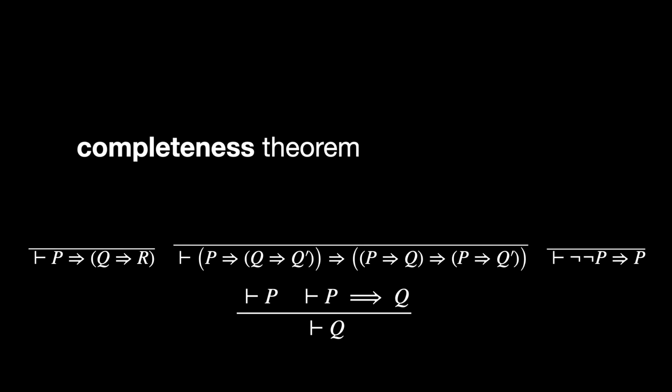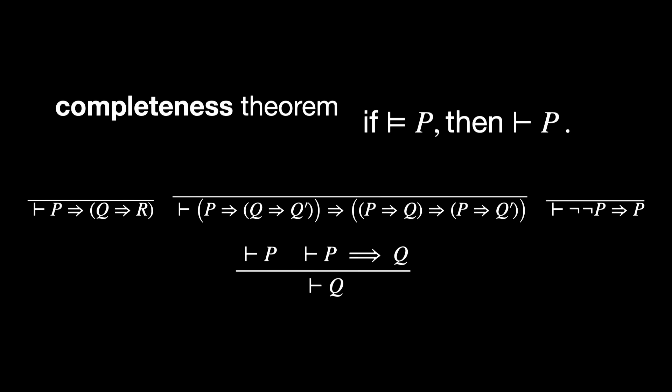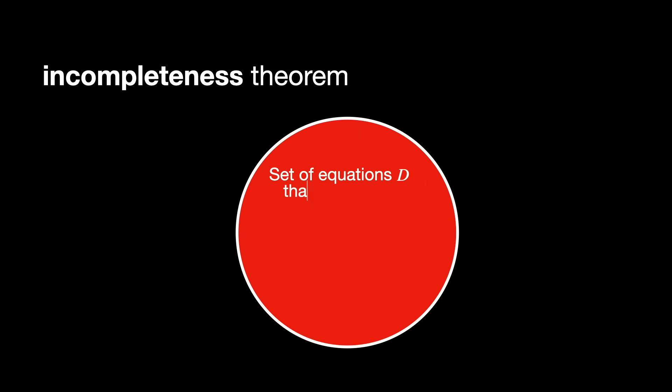Model theory addresses fundamental results such as the completeness and incompleteness theorems. The completeness theorem tells us that if a statement is true in all models of a theory, then it can be proven within that theory. The incompleteness theorem demonstrates that no consistent set of axioms can prove all truths about natural numbers.